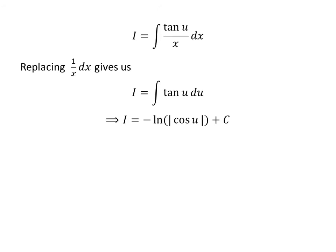So, i is equal to minus natural log of absolute value of cosine of u plus capital C. Capital C is the arbitrary constant of indefinite integral. Never forget to add this constant.